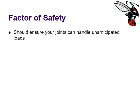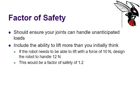You should ensure your joints can handle unanticipated loads. Include the ability to lift more than you initially think: if the robot needs to lift with a force of 10 newtons, design it to handle 12 newtons. This gives a factor of safety of 1.2 — that is, 10 times 1.2 equals 12.